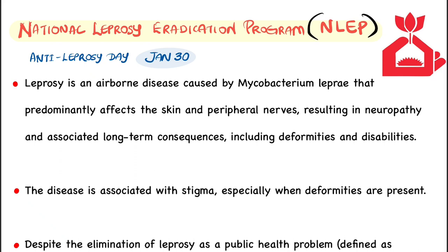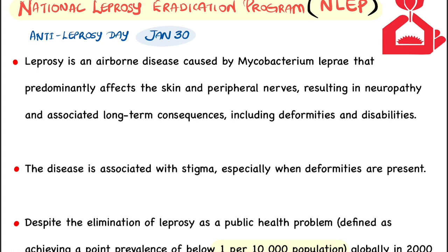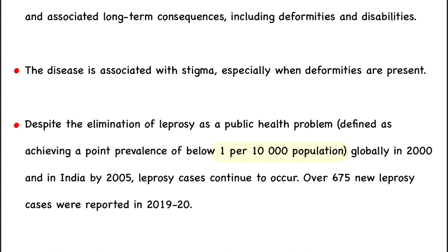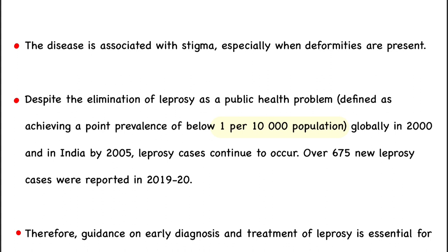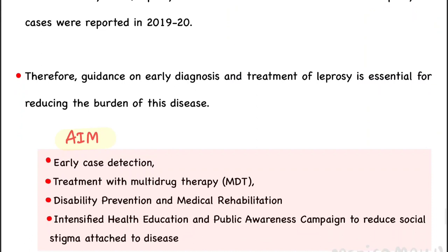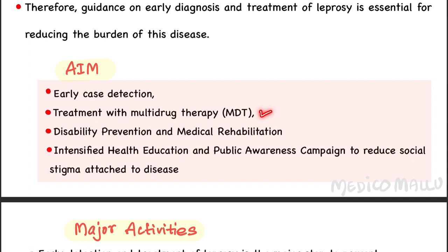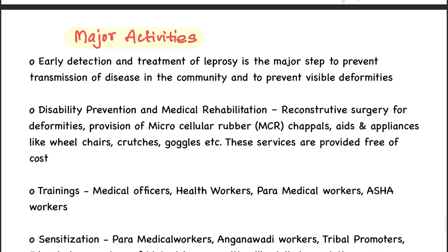The National Leprosy Eradication Program (NLEP) aims to eradicate leprosy, reduce the stigma of the disease, prevent deformities, and support rehabilitation. The target is one case per ten thousand population, achieved in 2005, though around 675 new leprosy cases were still reported in 2019-20. The aims of the program include early detection, treatment with multi-drug therapy, disability prevention, medical rehabilitation, and intensified health education campaigns to reduce social stigma.